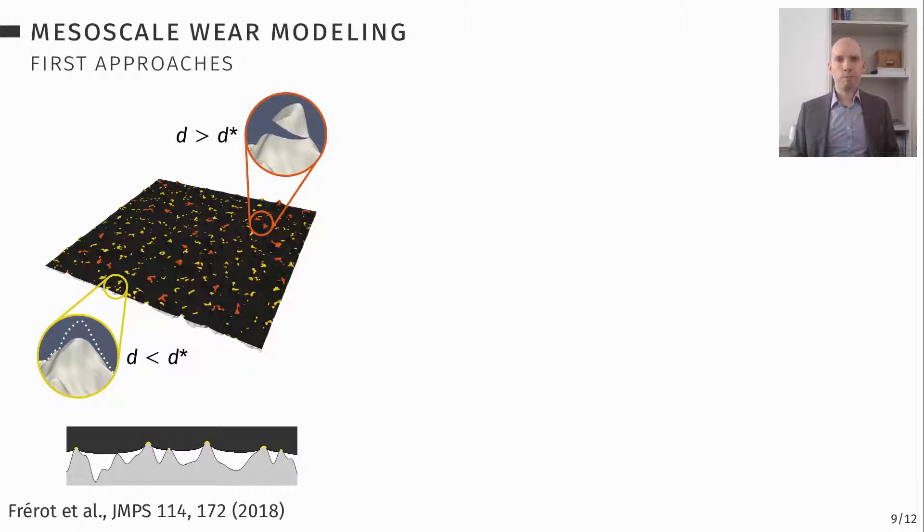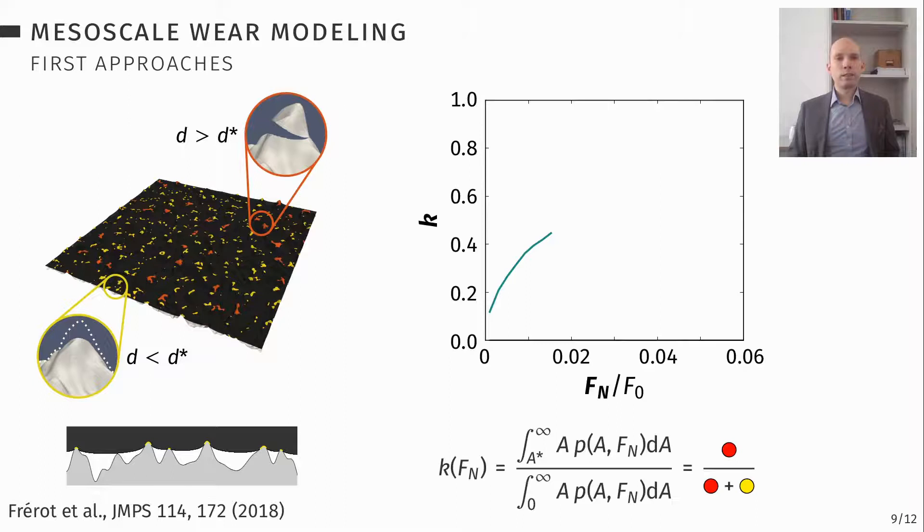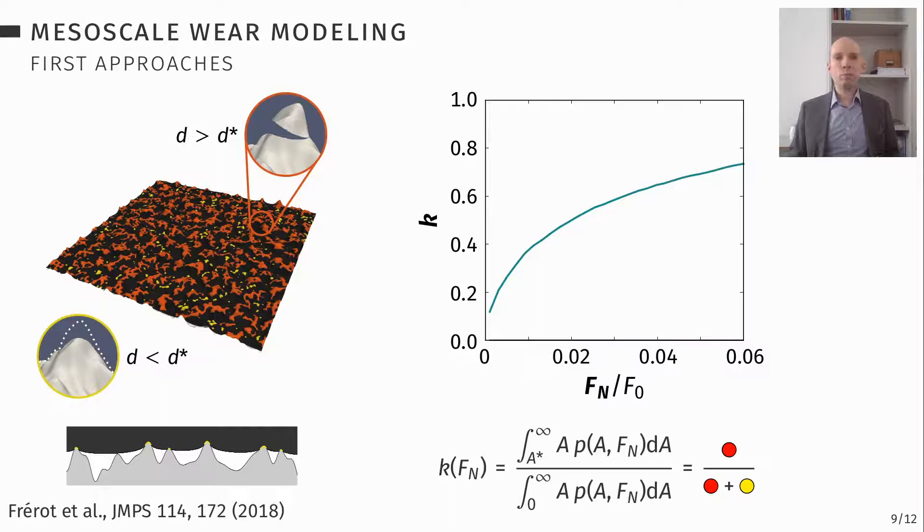So the first approach was done by Luca Freirot with boundary element method modeling. We basically made contact maps. And on these contact maps, you can basically see all these junctions that form. And you can look at their size. And then you can color them here. If they're bigger than the critical size, you color them red. If they're smaller than that, you color them yellow. And then you define the wear coefficient basically as the ratio of red area divided by red plus yellow area, which is the real contact area. And if you increase the load, you get more and bigger contacts.